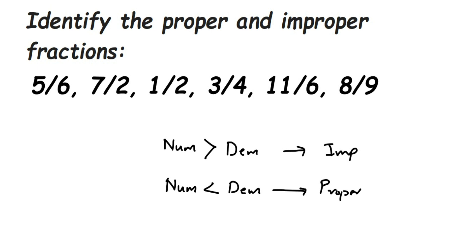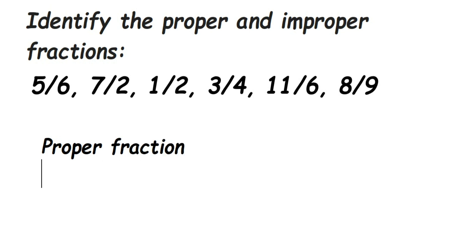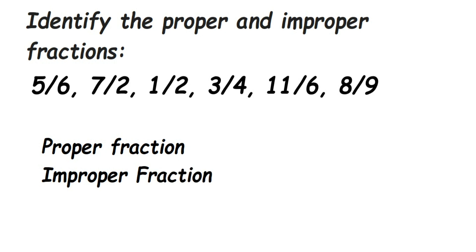Remember: if the numerator is smaller, it's called proper; if it is greater than the denominator, it's called improper. Now let us identify them. I'm going to write down two columns — first, proper fraction, and here we'll write down improper.